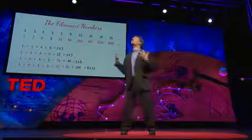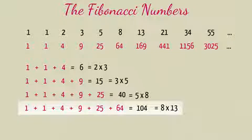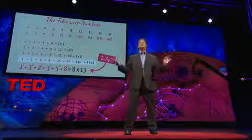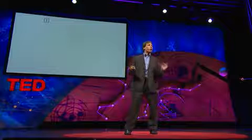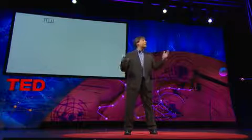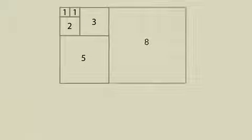As much fun as it is to discover these patterns, it's even more satisfying to understand why they are true. Let's look at that last equation — why should the squares of 1, 1, 2, 3, 5, and 8 add up to 8 times 13? I'll show you by drawing a simple picture. We'll start with a 1 by 1 square, and next to that put another 1 by 1 square. Together they form a 1 by 2 rectangle. Beneath that, I'll put a 2 by 2 square, and next to that a 3 by 3 square. Beneath that, a 5 by 5 square, and then an 8 by 8 square, creating one giant rectangle.